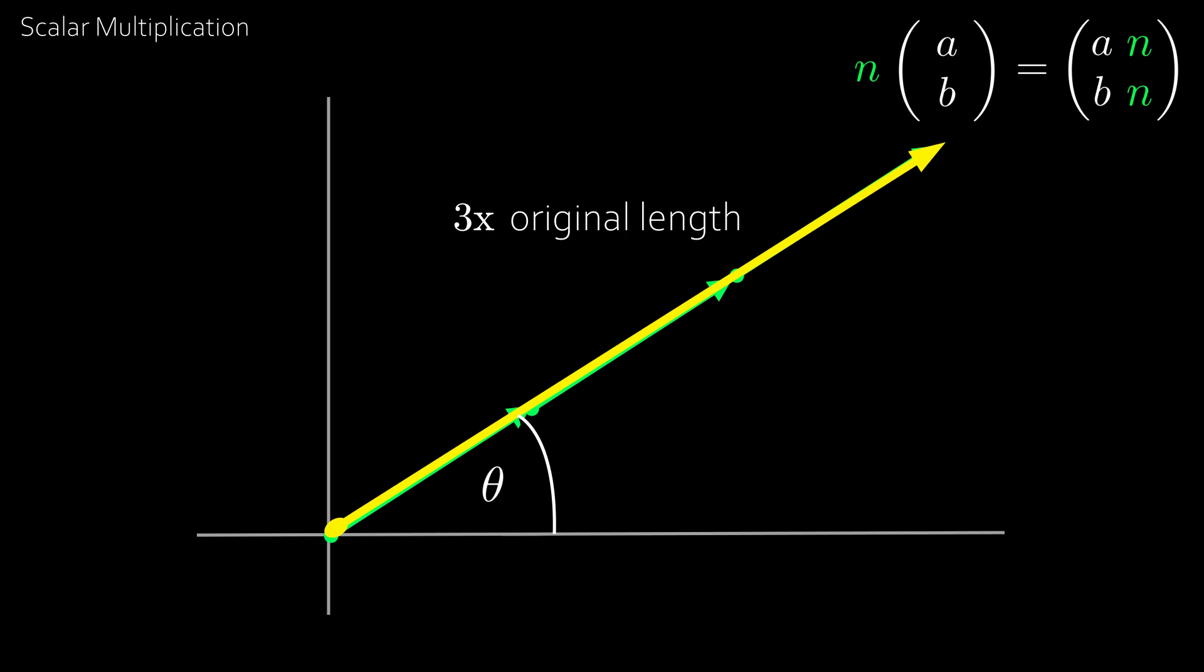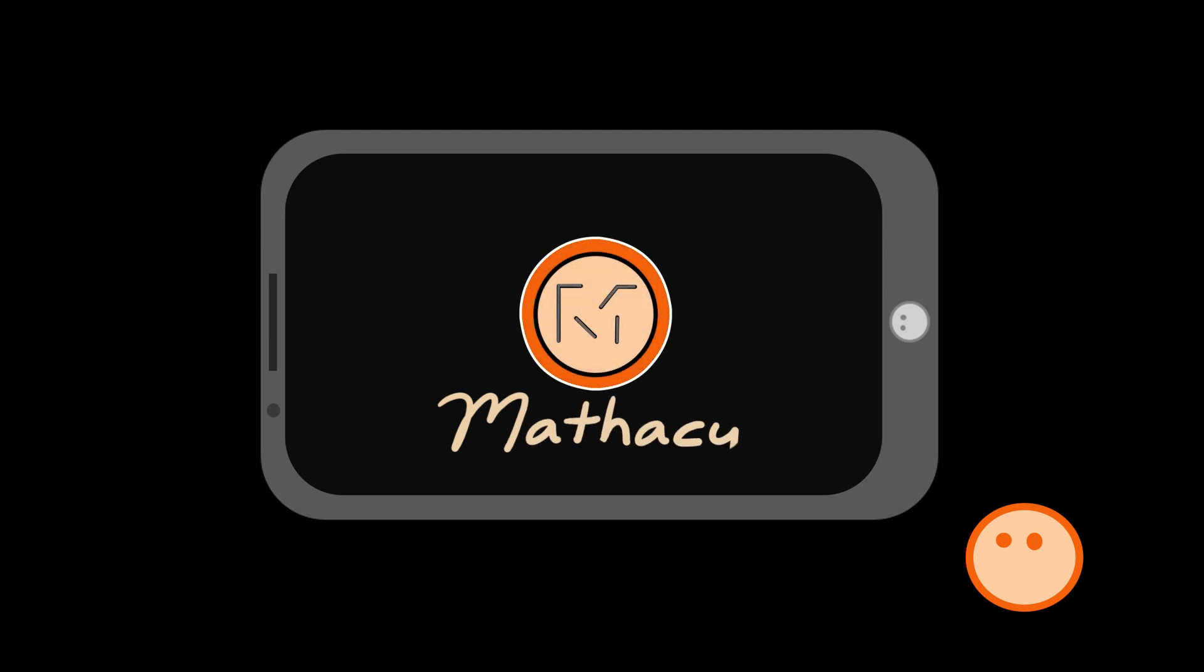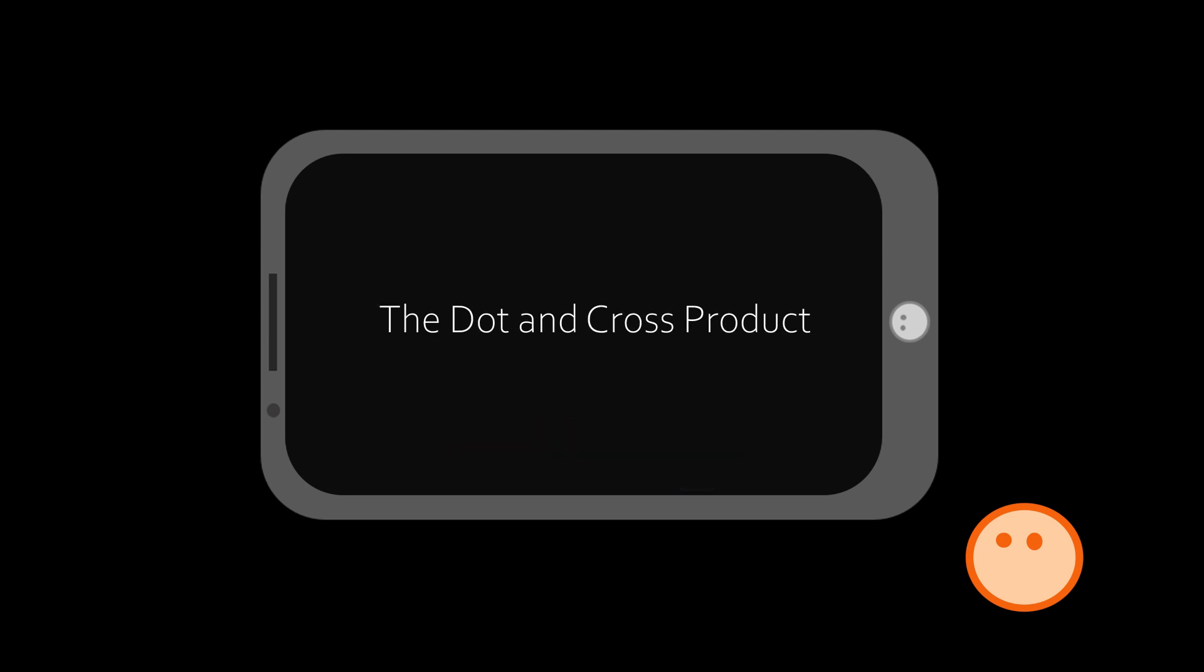Now, you know how to multiply a scalar or number to a vector, but what about a vector multiplied by a vector? Well, it's actually not so simple. There's actually a few ways we can do this, so we take a look at this in our next video on the dot and cross products.